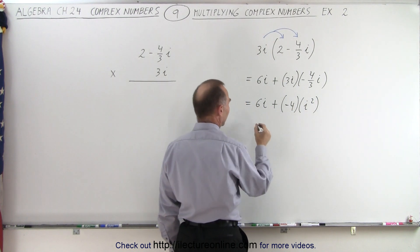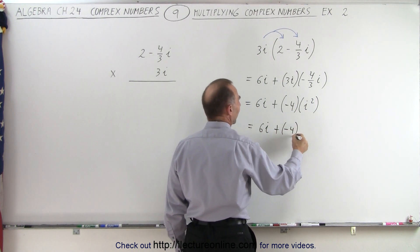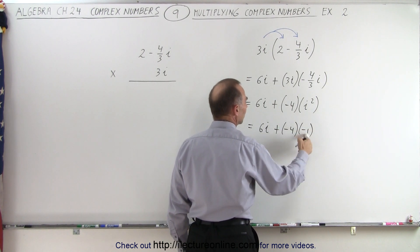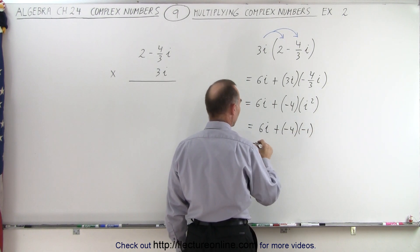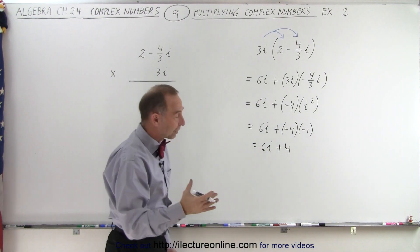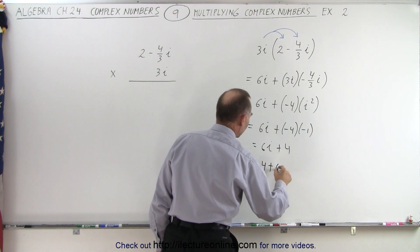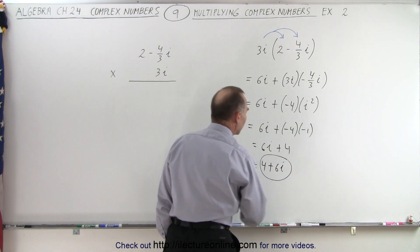Now, i squared equals negative 1, so this is equal to 6i, plus a negative 4 times a negative 1. Of course the two negative signs negate each other, so this becomes 6i plus 4. And then typically we like to write the real part first, so this is equal to 4 plus 6i, and that would be the product.